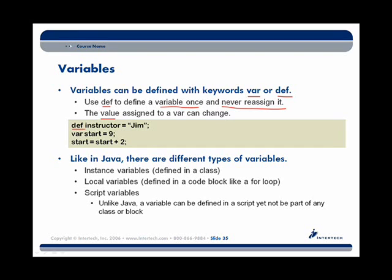If I define a variable called instructor using def and assign it the value of the string literal Jim, I can't ever change instructor to be some other string. Versus using var to define start, I can assign it the value 9 but then later change it to some other value. You can think of def as being a final in Java terms.